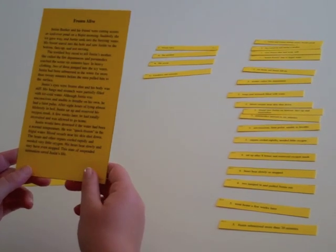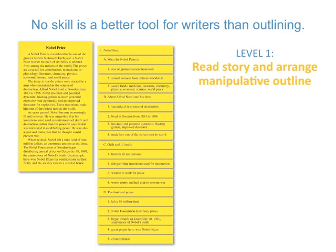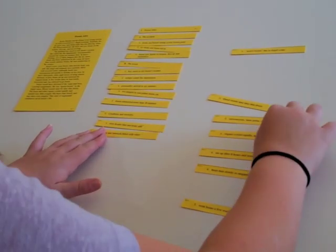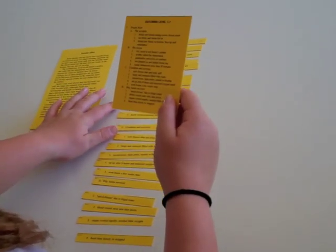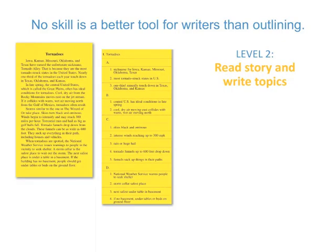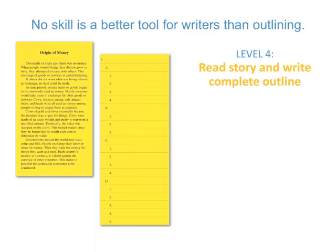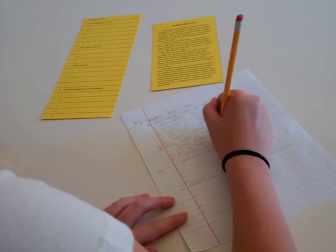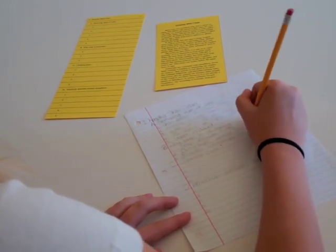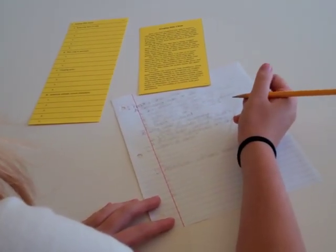The first step in all levels is to read the nonfiction story. In the first level, the pieces are manipulatives — students arrange them into an outline. Answer keys for all levels show proper format. In level two, the student writes the topics for each paragraph; in level three, the subtopic details. By level four, students write the entire outline. The essays are structured to enable students to succeed. The unique design of the materials models outlining throughout. Students will master it as they work through the 28 sets.